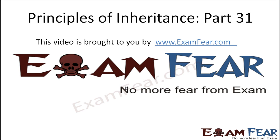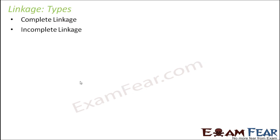Hello friends, this video on principles of inheritance part 31 is brought to you by examfear.com. Let us talk about the types of linkage. There are two types of linkage: complete linkage and incomplete linkage. The more the linkage, the lesser the recombinations will be seen.